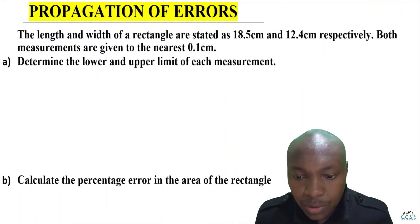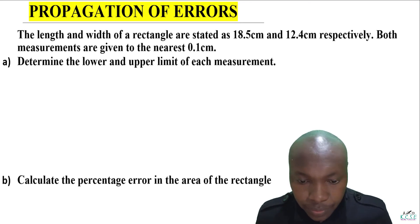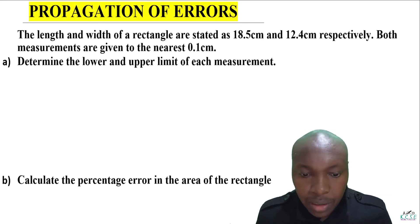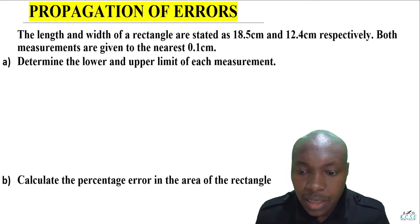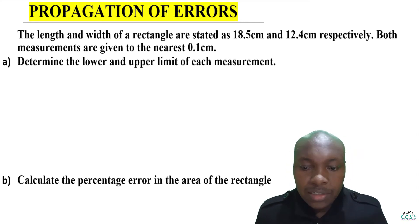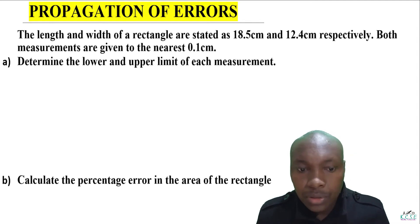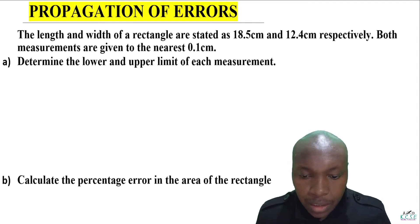Welcome. Let us work on this question on propagation of errors. The measurements given are the length and the width of a rectangle, stated as 18.5 and 12.4 centimeters respectively. Both measurements are given to the nearest 0.1 centimeter.